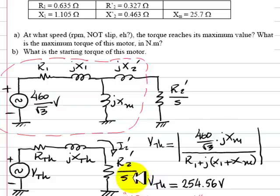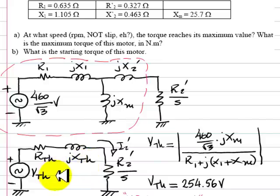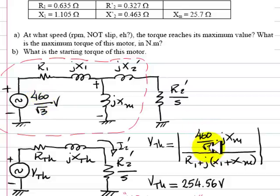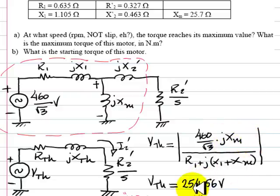If that is so, then S has to be R2' divided by the absolute value of that impedance. Let's find VTh. VTh is just the voltage at this node in the circuit with nothing connected to the right. That is a voltage divider: 460 over root 3, multiplied by this impedance, divided by the sum of all the impedances in that loop. The absolute value is 254.6 volts.